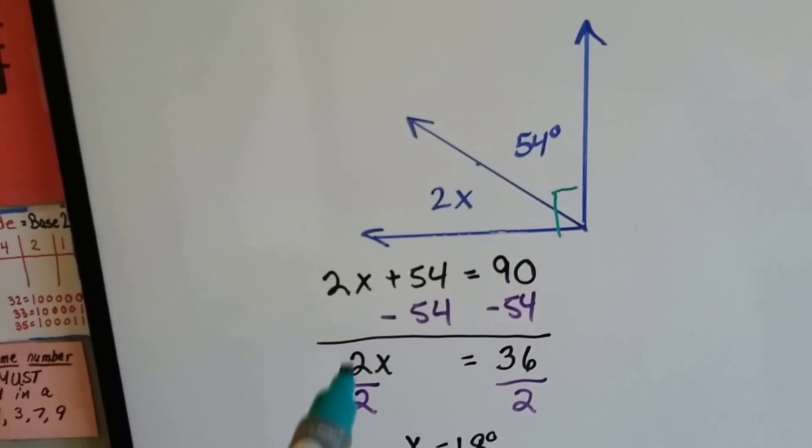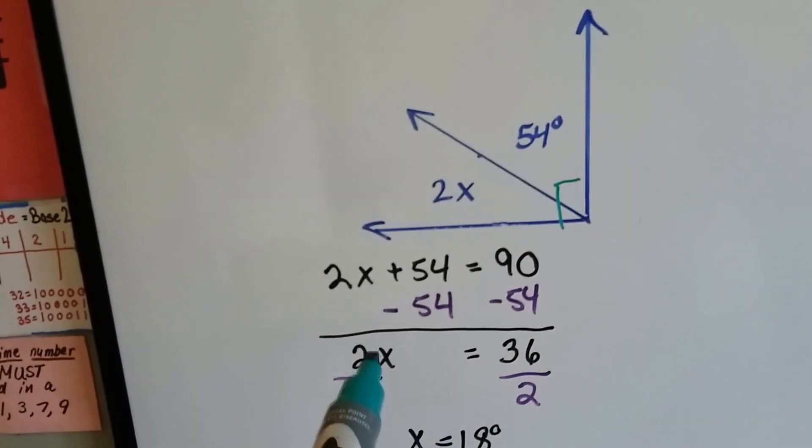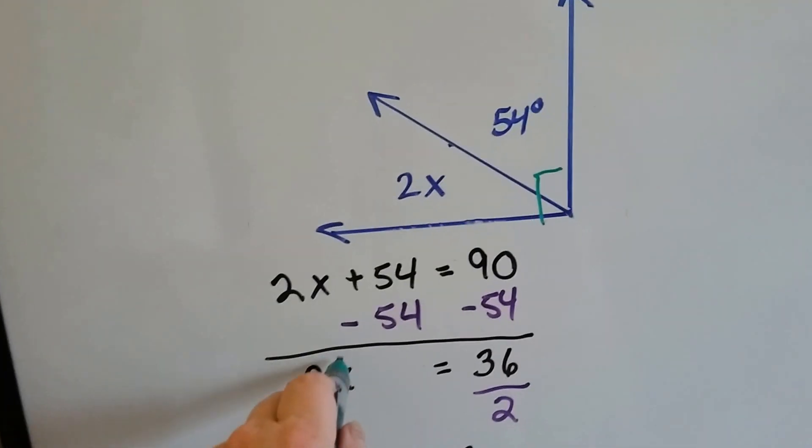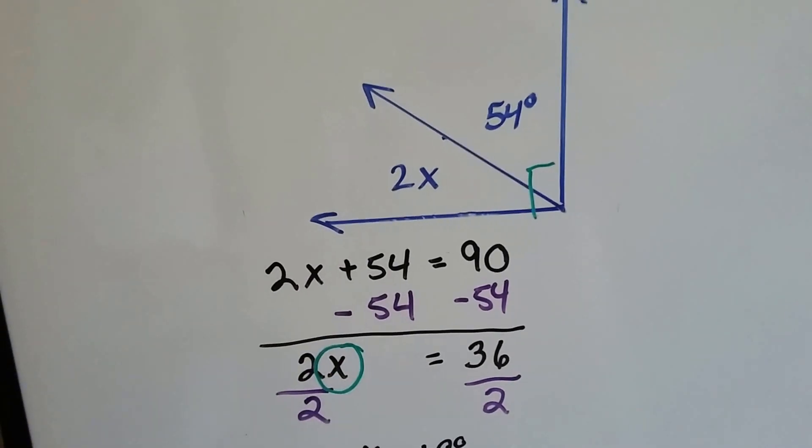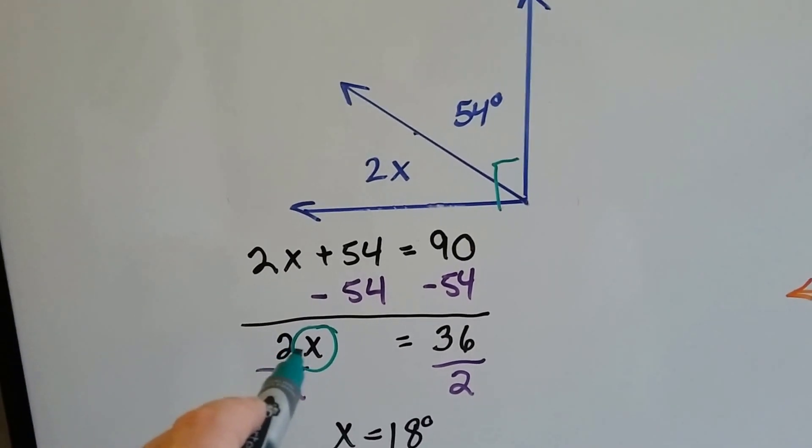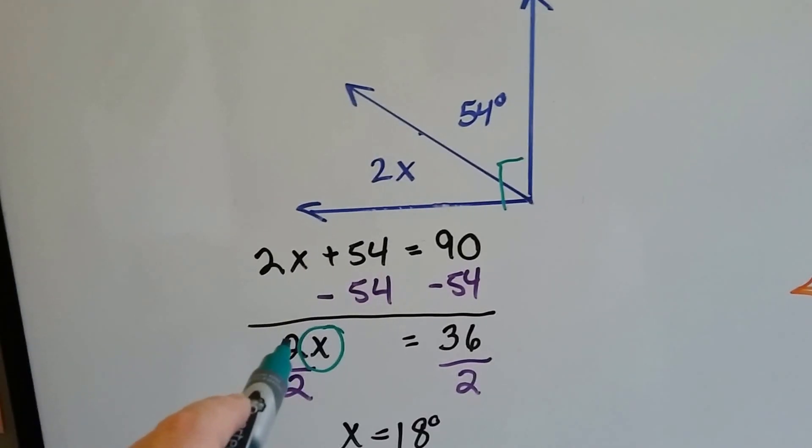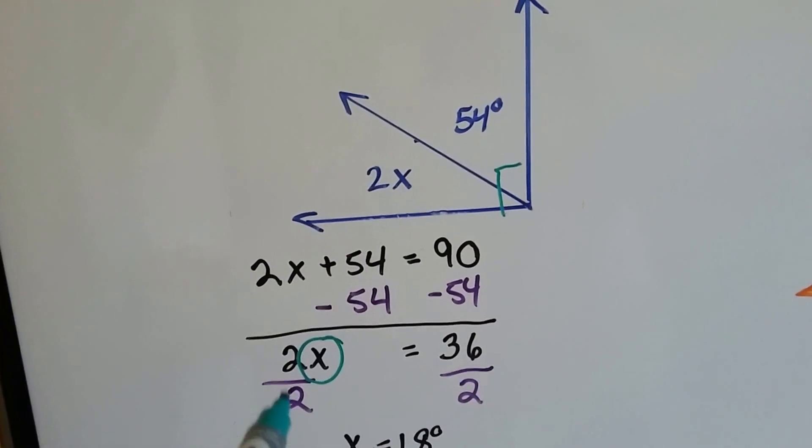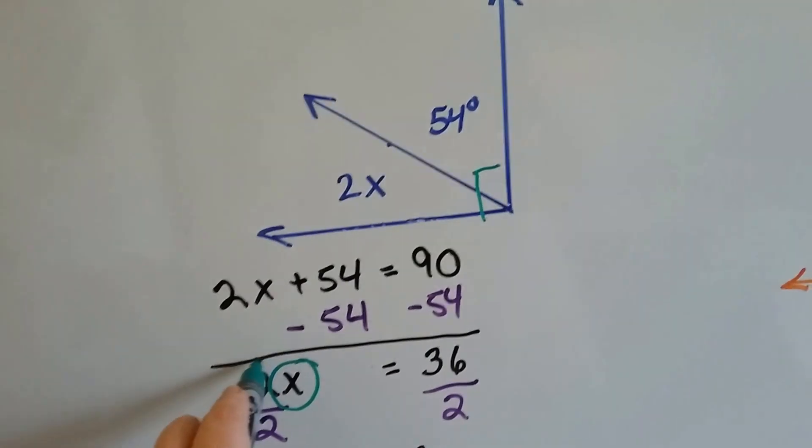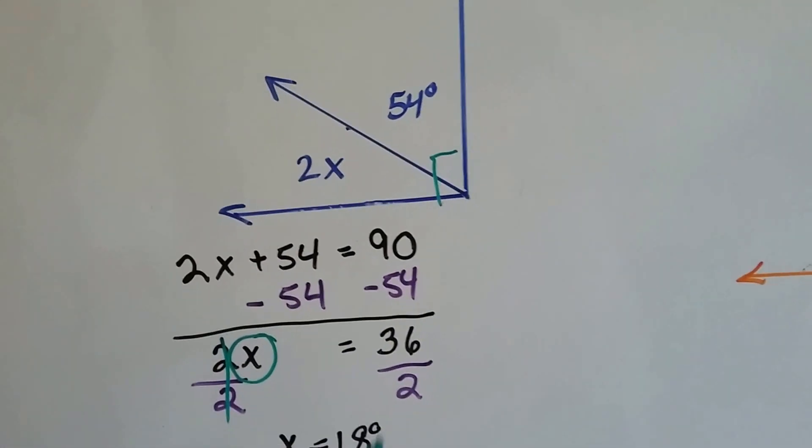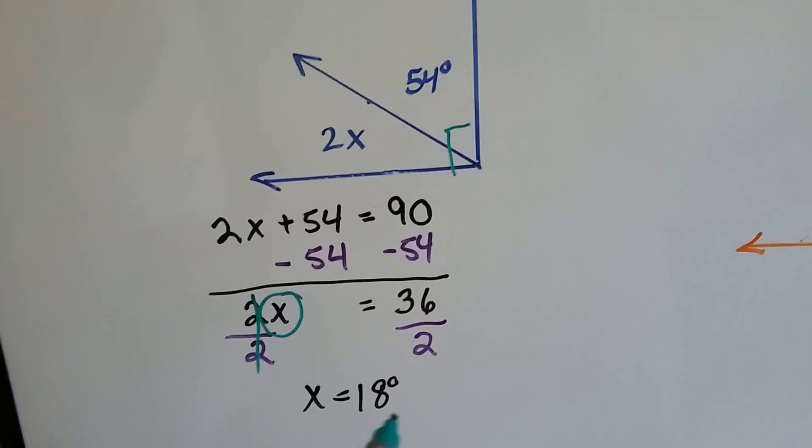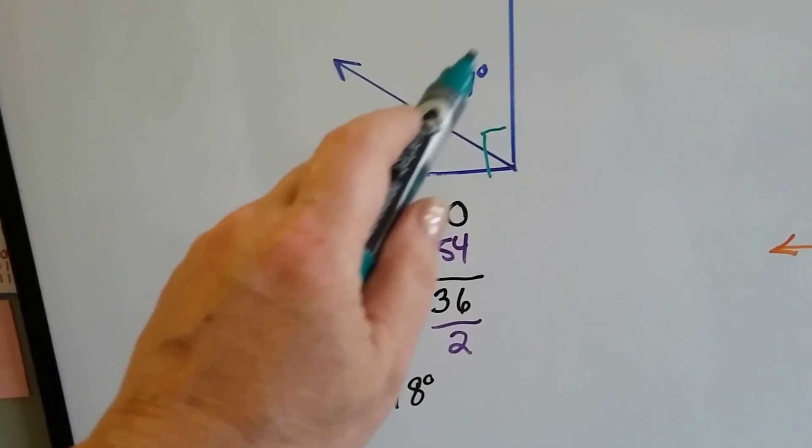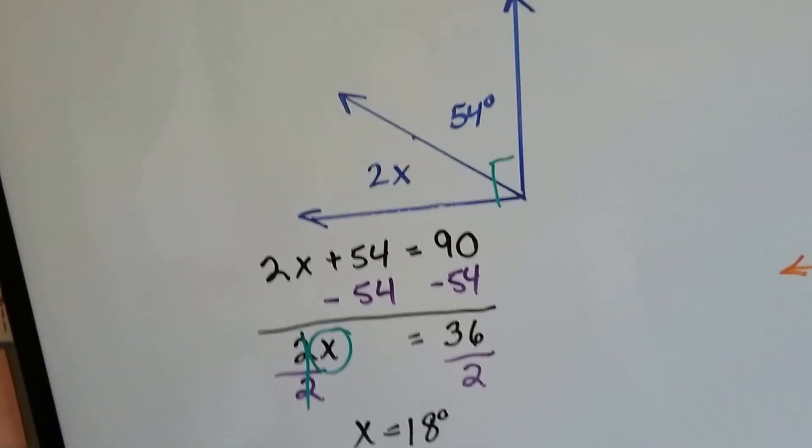So now all we have to do is divide both sides by 2 to get this x by itself. We want to isolate the x to one side. Because it's 2 times x and it's multiplication, the opposite of multiplication is division, so we divide both sides by 2. That gets rid of these two, and 36 divided by 2 is 18, so we know x must equal 18. 2 times 18 plus the 54 is the 90.